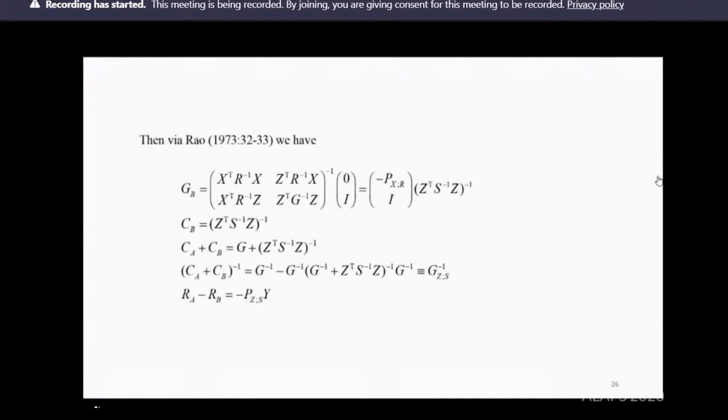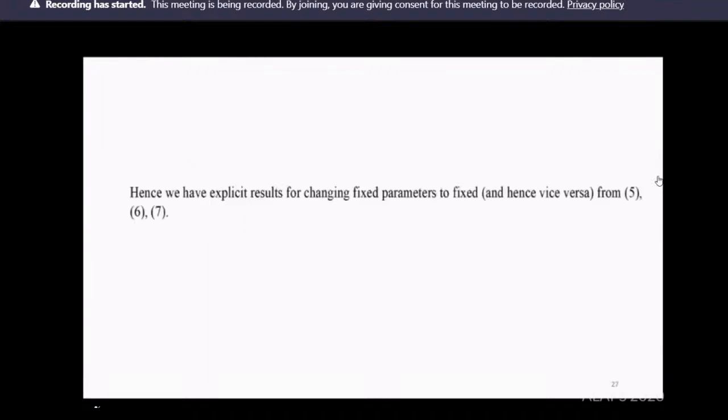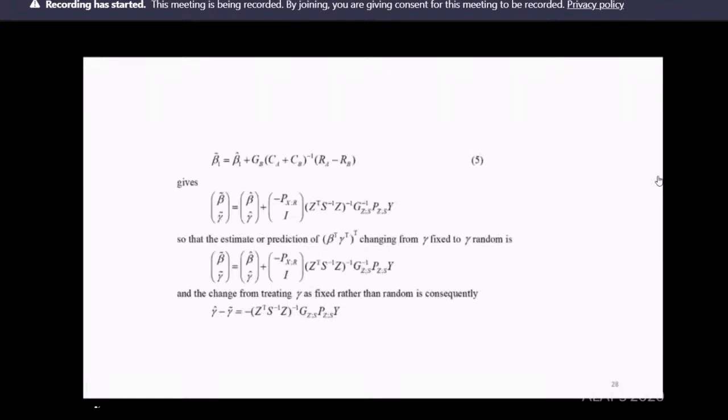If we do that and use the linear statistical inference material in Rao 1973, what we get is the following. You'll see, at least in this format, they're not terribly complicated. We've now got explicit results for changing fixed parameters to fixed, and vice versa. These are them here. We've got the change in beta. There's a change in the beta parameter even though it's the fixed one. There's certainly a change in the gamma parameter, which I've made explicit at the bottom. That's the change from moving from random to fixed or fixed to random.